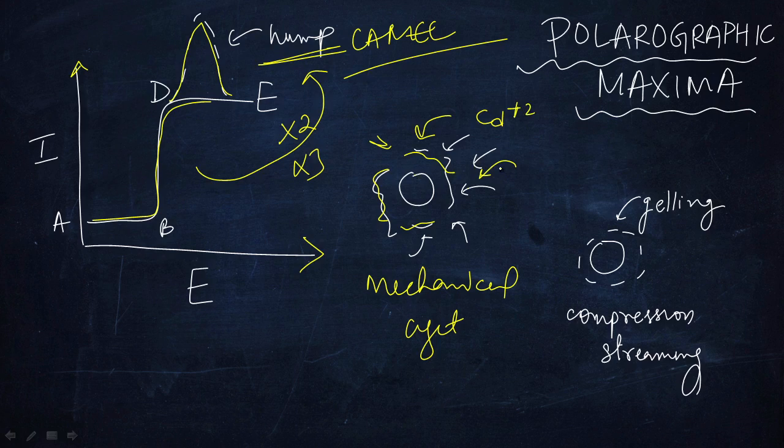When a drop of mercury falls into the surface, then what happens is that the current will increase. We don't have anything else, we say polarographic maxima. Now the second question comes: how does it stop?